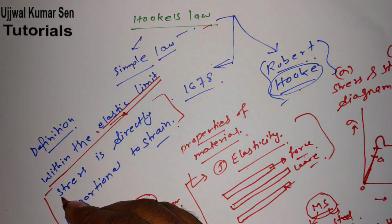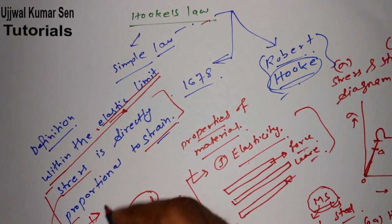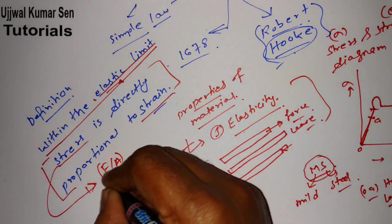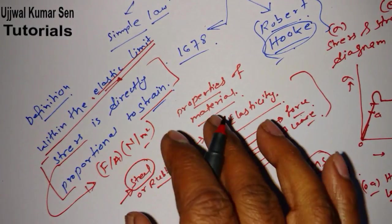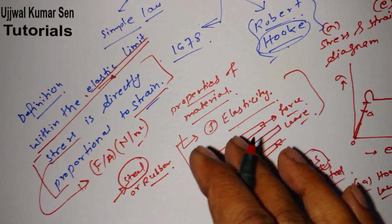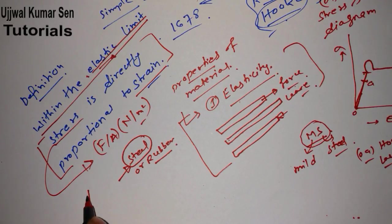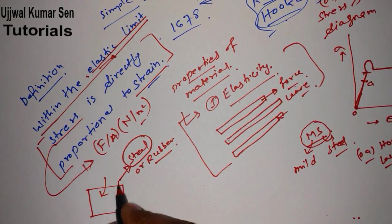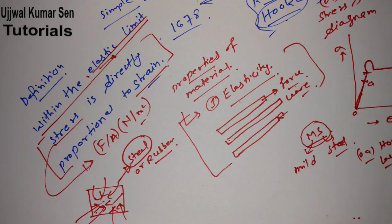Now, what is stress? In numerical terms, stress is force divided by area, and its unit is Newton per meter square. More precisely, suppose there is a body with a load applied to it. When the body is stable, there is a reaction force acting, and that reaction force per unit area is known as stress.